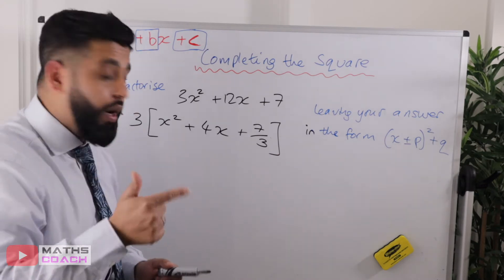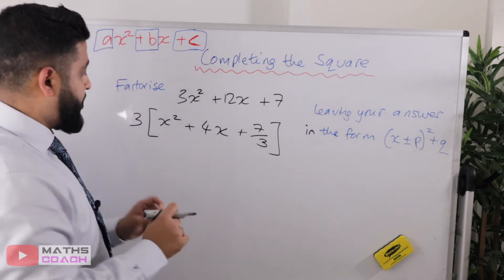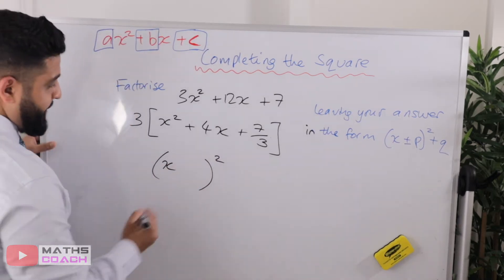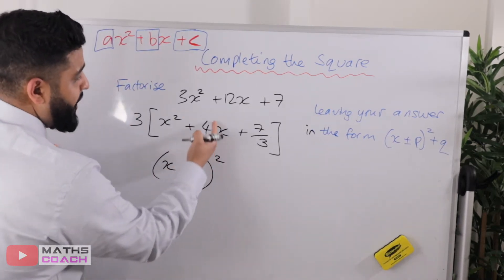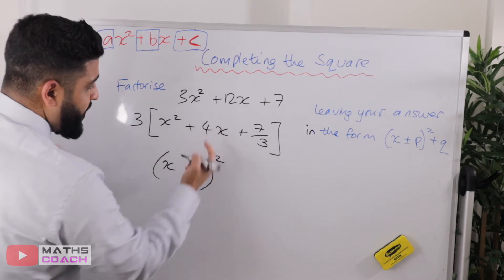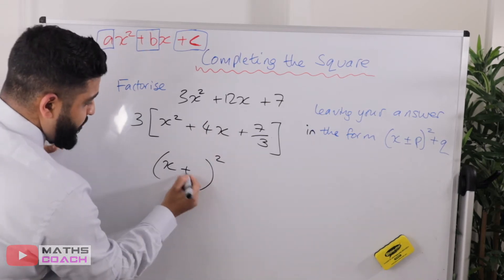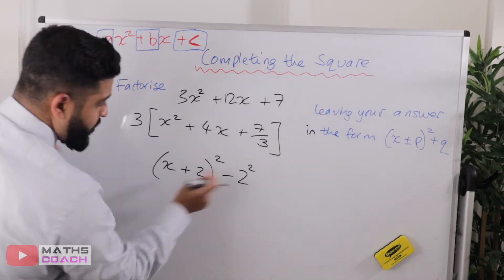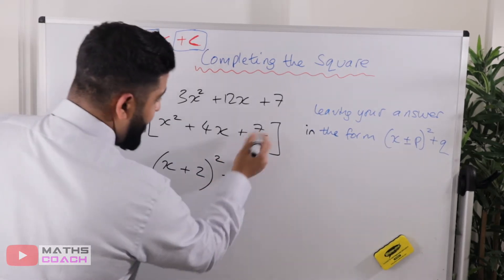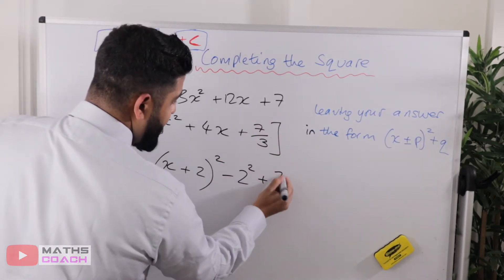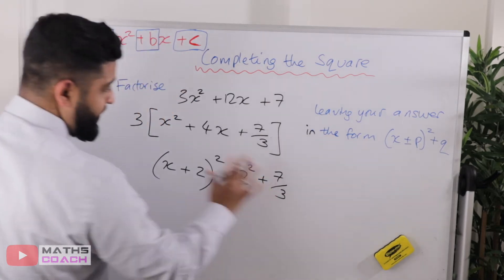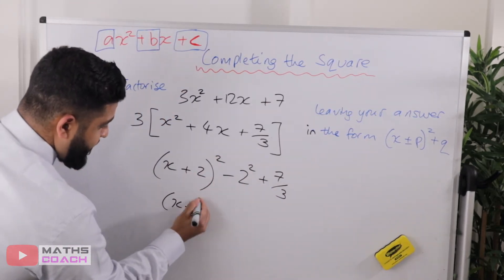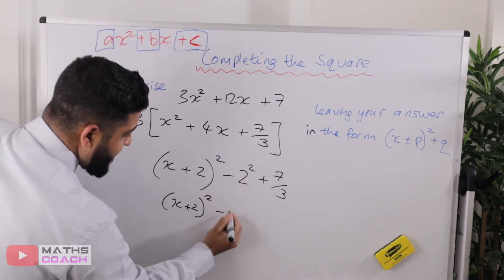Step number 2 is to now use that bracket. Step number 2 is to divide the x coefficient by 2, so 4 divided by 2 is 2. We write x plus 2 in a bracket, take away that value squared, and we've got the 7 over 3 hanging around outside.